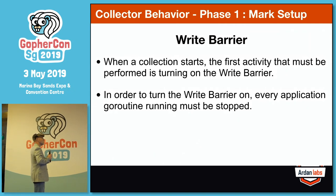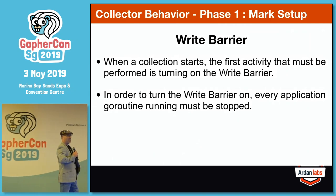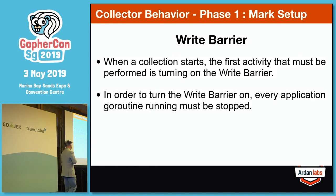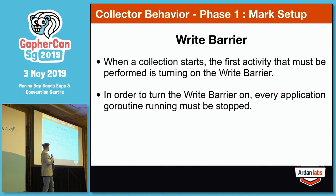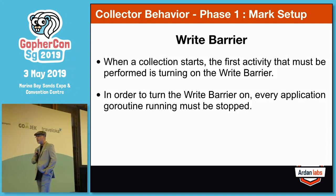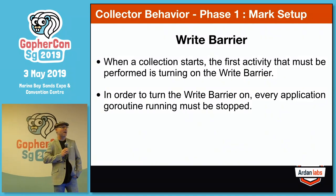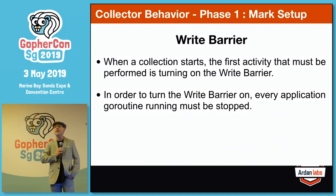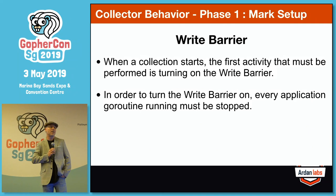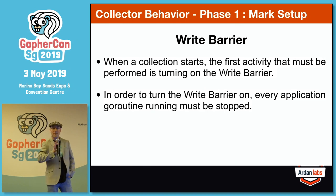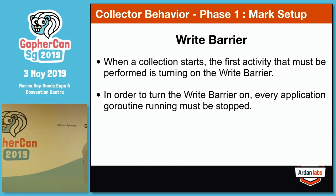Phase one is mark setup. The very first thing the collector has to do is turn the write barrier on — it's the very first thing that has to happen. The way I think about it: we're going to have a collector running concurrently with your application, going through the heap and through memory that you're working with, so all of that concurrent activity has to be safe. The write barrier is there to make sure all of that concurrent activity is completely safe as it's happening.